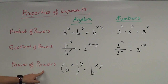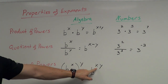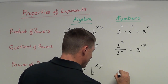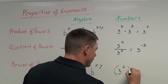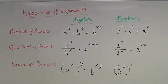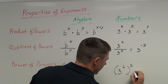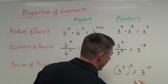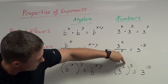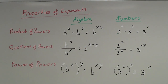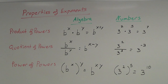For the number example of power of powers: if I have 3 to the second power, all raised to the fifth power, that 2 is being taken to the fifth power, so I multiply the exponents — 2 times 5 — to get 3 to the tenth power. Those are the product of powers, quotient of powers, and power of powers. I'll be doing another video on the rest of the properties of exponents.